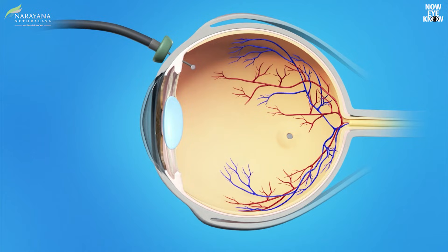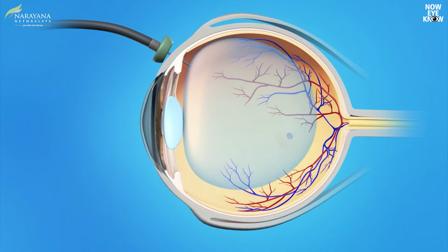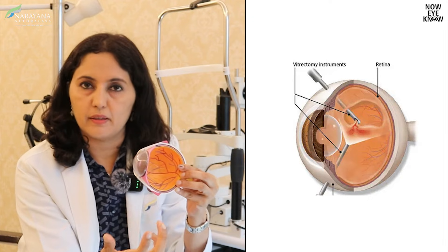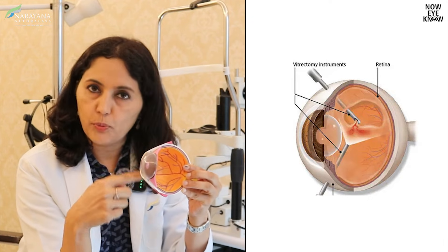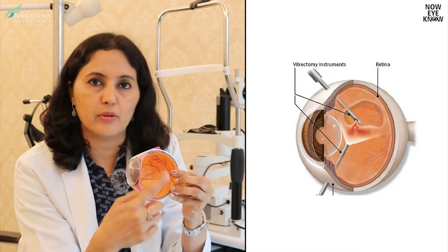Once the gel has been removed, it may have to be replaced with certain other substances. The most commonly used substances are silicone oil or a gas bubble. Silicone oil, which is a viscous substance, is placed as a single bubble at the back of the eye. Once its effect is achieved and the retinal detachment settles, the oil is removed because it doesn't get absorbed. A gas bubble, on the other hand, gets absorbed by itself from the eye, so no second surgery is needed to remove it.